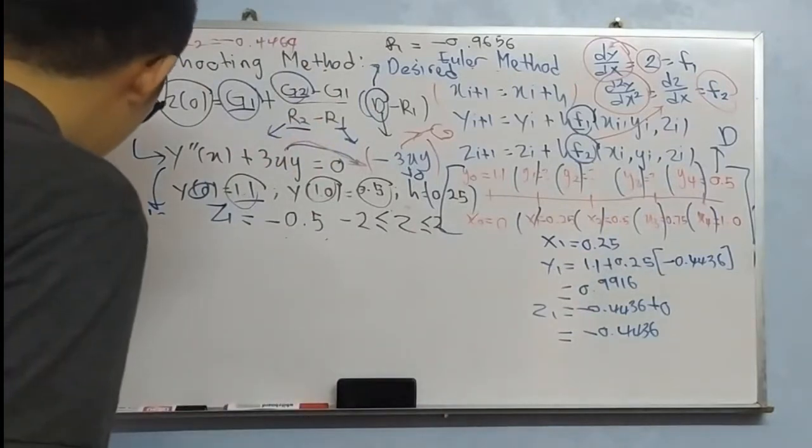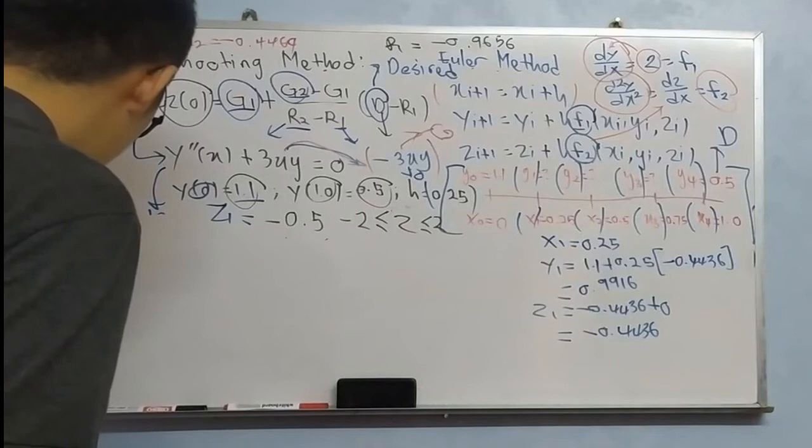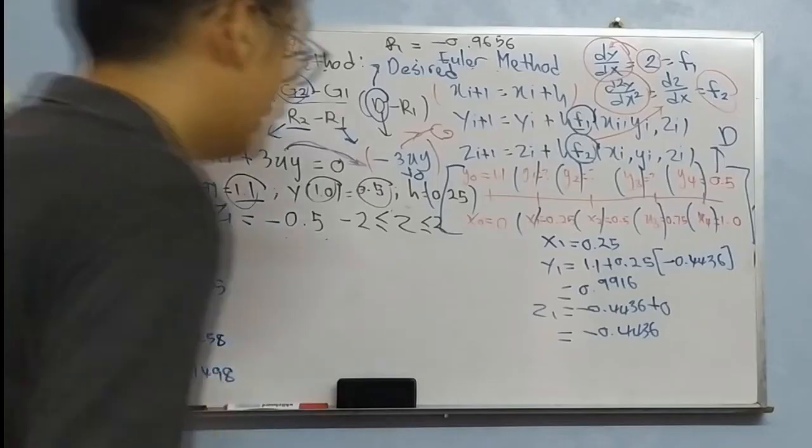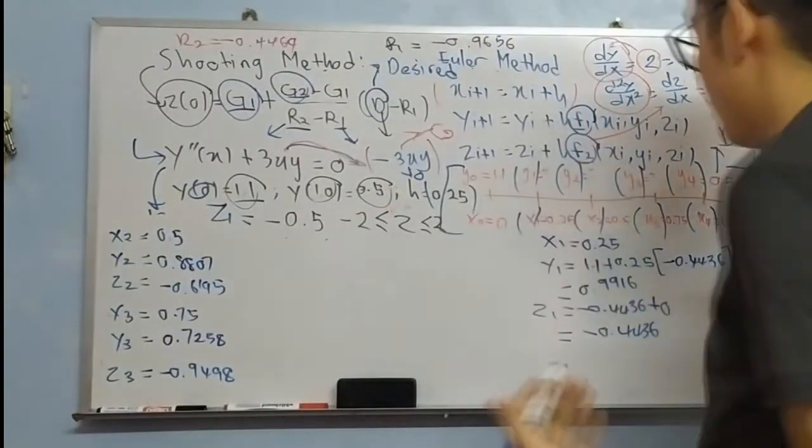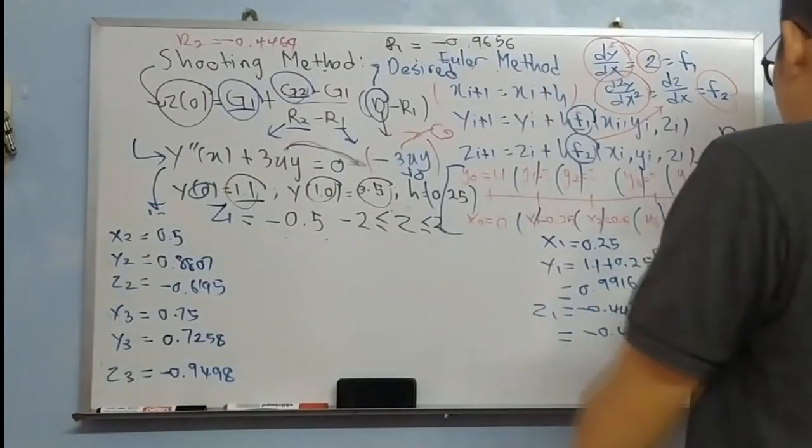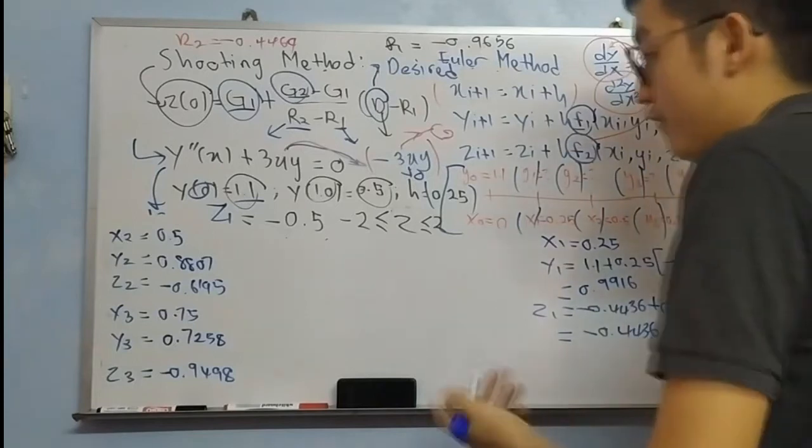So, X2, Y2, Z2, X3, Y3, and then Z3. Okay, last but not least, I will substitute one by one to see whether we will get this answer approximately 0.5.